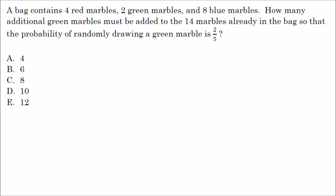Let's look at this first question. It says: a bag contains four red marbles, two green marbles, and eight blue marbles. How many additional green marbles must be added to the 14 marbles in the bag so that the probability of randomly drawing a green marble is two-fifths? There's a lot going on here, but I'm going to focus on the question: how many additional green marbles must be added so that we get a probability of two-fifths.